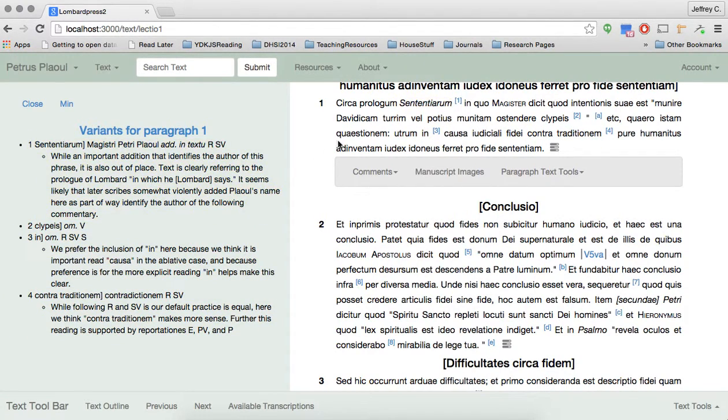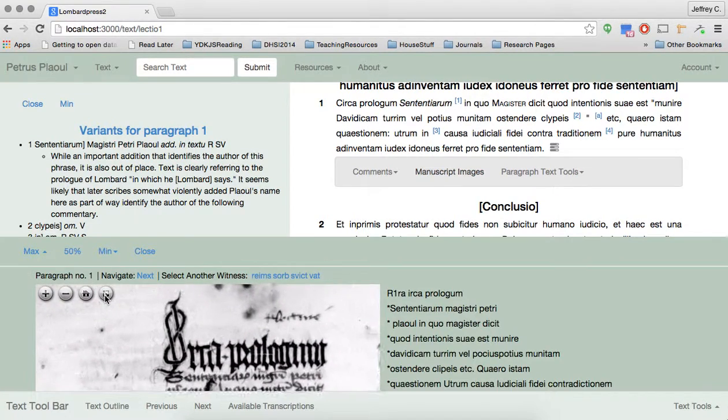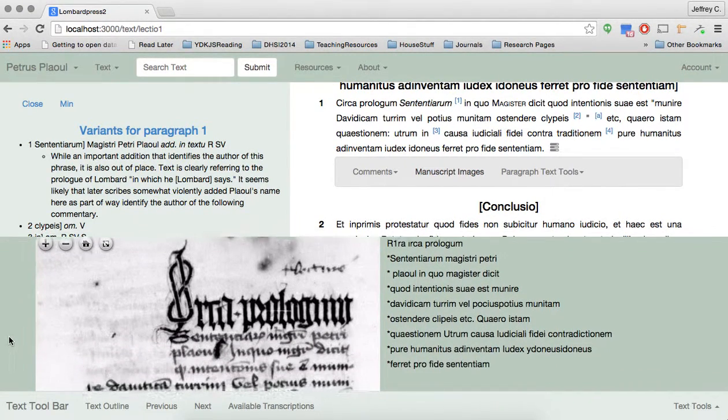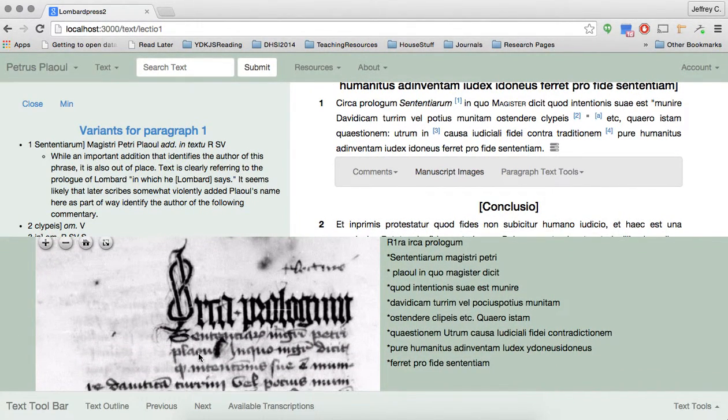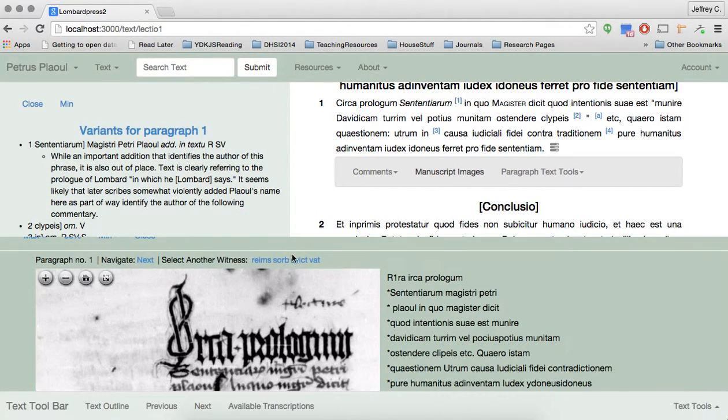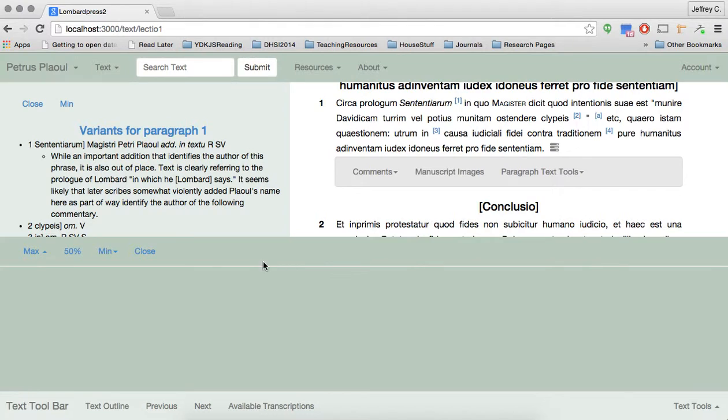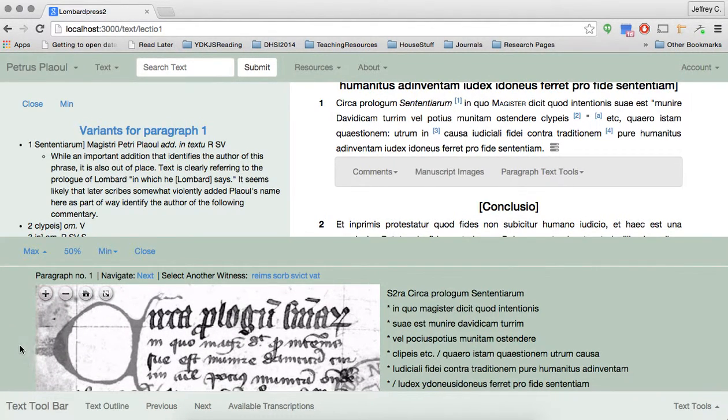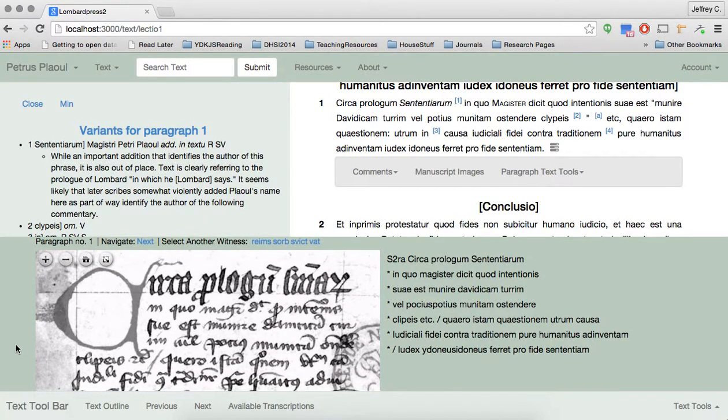What's kind of nice is the ability to consult the images as you're reading that entry. So in this entry, notice that we say manuscript R and SV include the name Peter Plau, and you can grab the image here and see exactly what it said. And you can contrast that one with manuscript witnesses that don't have that. Now you can see exactly what the note's trying to indicate to the reader.